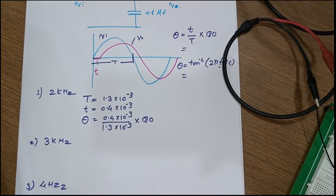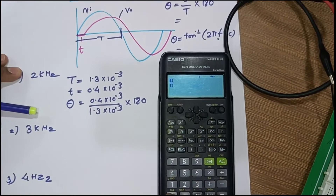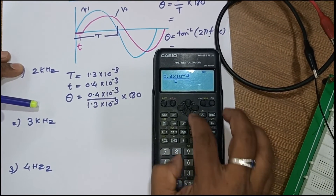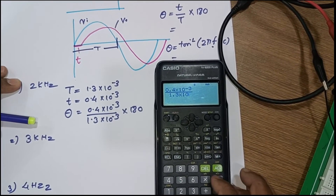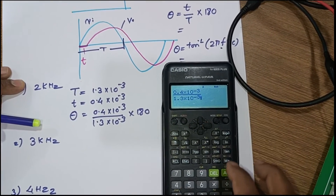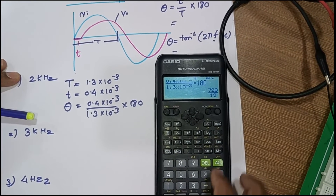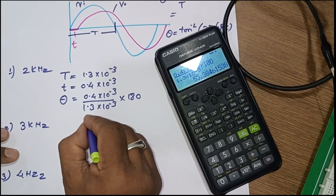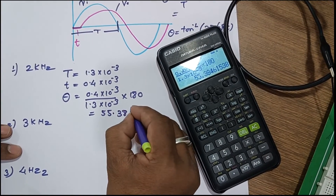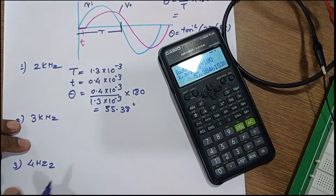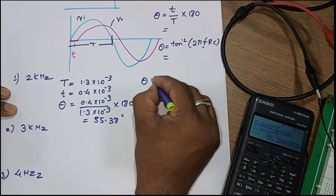Calculating for one half cycle: 0.4 × 10⁻³ divided by 1.3 × 10⁻³, the whole multiplied by 180. We are getting the answer as 55.38 degrees. This is the phase shift between the input and output. Now let us see the calculated one.